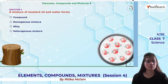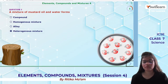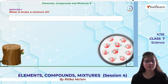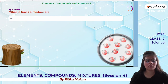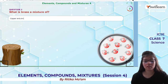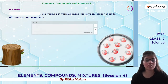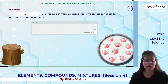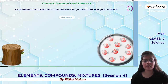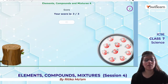Activity: The mixture of mustard oil in water forms a heterogeneous mixture. Brass is a mixture of copper and zinc. Air is a mixture of various gases like oxygen, carbon dioxide, nitrogen, argon, neon, etc.